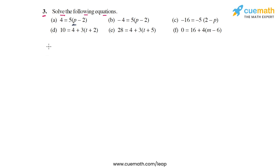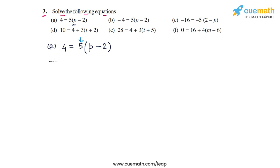Let's start with the first equation, part a, which is 4 = 5 times (p minus 2). As the first step, we can get rid of this 5 by dividing both sides of the equation by 5. If we do that, we get 4/5 on the left side and p minus 2 on the right side.